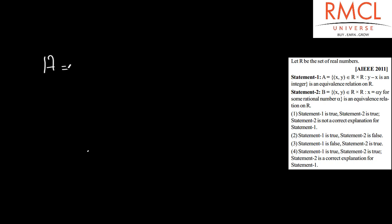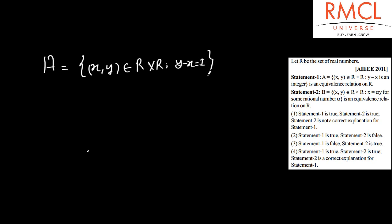The next question is from AIEEE 2011. In this question, in statement 1, it is given that A equals the set of XY where XY belongs to R, and the relation is given that Y minus X is an integer. We have to find that A is an equivalence relation or not.